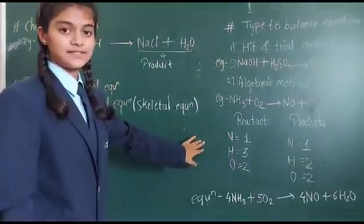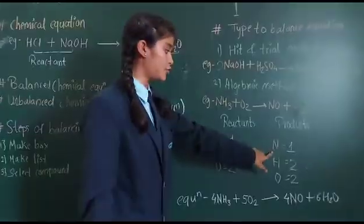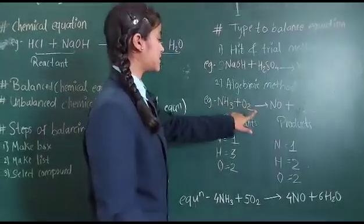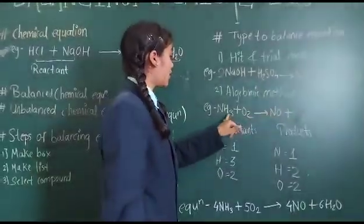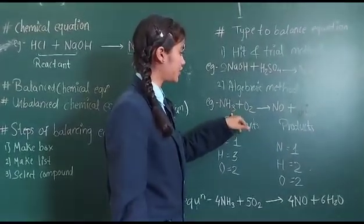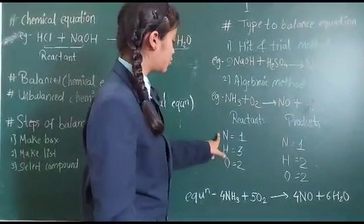So how to balance this equation. So first, N and N means nitrogen are balanced. But we will see in the equation. Here is 1 N, here is also 1 N. Next H. Here 3 H, but here only 2 H. So I should multiply this.